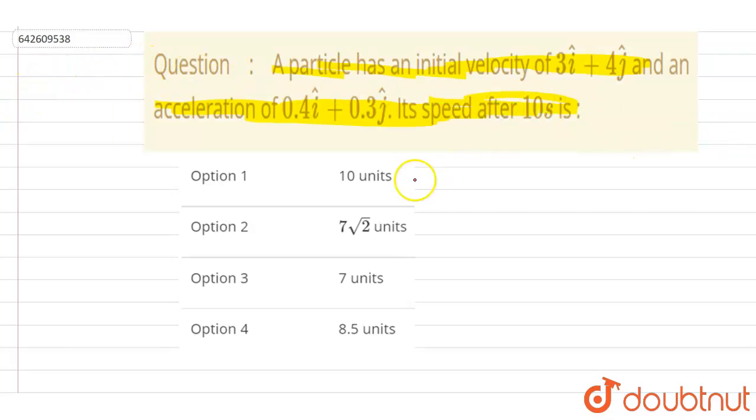So if I write down the velocity formula, it is v vector equals u vector plus a vector into time. If I wanted to find out the velocity at 10 seconds, I will write down: